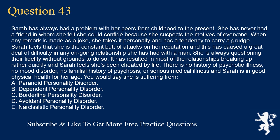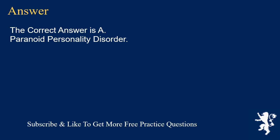Question 43. Sarah has always had a problem with her peers from childhood to the present. She has never had a friend in whom she felt she could confide because she suspects the motives of everyone. When any remark is made as a joke, she takes it personally and has a tendency to carry a grudge. Sarah feels that she is the constant butt of attacks on her reputation and this has caused a great deal of difficulty in any ongoing relationship she has had with a man. She is always questioning their fidelity without grounds to do so. It has resulted in most relationships breaking up rather quickly and Sarah feels she's been cheated by life. There is no history of psychotic illness, no mood disorder, no familial history of psychosis, or serious medical illness and Sarah is in good physical health for her age. You would say she is suffering from: A. Paranoid Personality Disorder. B. Dependent Personality Disorder. C. Borderline Personality Disorder. D. Avoidant Personality Disorder. E. Narcissistic Personality Disorder. The correct answer is A. Paranoid Personality Disorder.